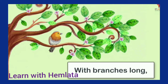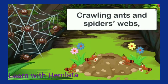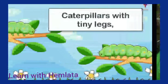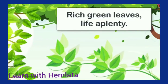The tree has branches, leaves, and birds — crows and birds — and spiders. There is a spider web, makdi ke jale, and a caterpillar with tiny legs, a small light green colored caterpillar on the green leaves, pattiyan, which are so nice.